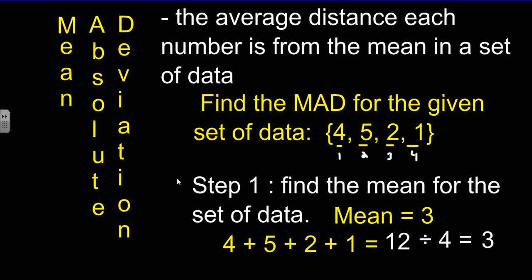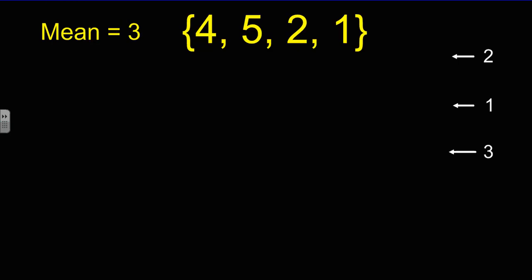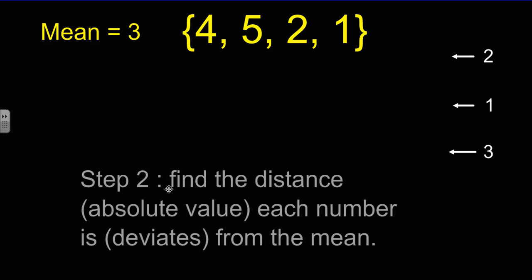Now to find the MAD, we have to take it a couple steps further. So if we know what the mean is, we're going to use the numbers in this particular set and find the distance or absolute value that each number deviates from the mean.